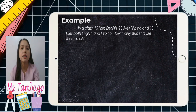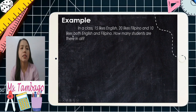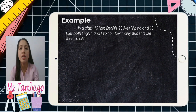In a class, 15 like English, 20 like Filipino, and 10 like both English and Filipino. The question is: how many students are there in all?